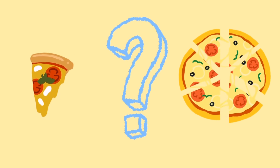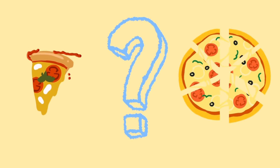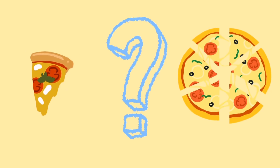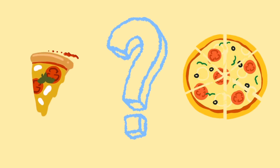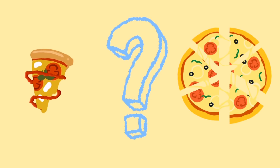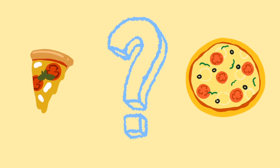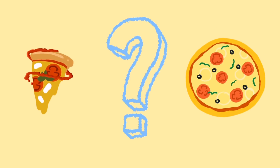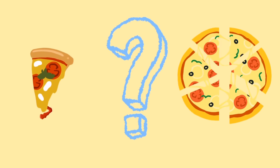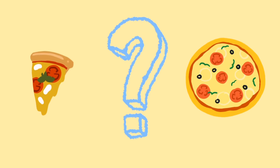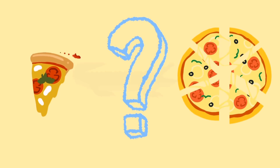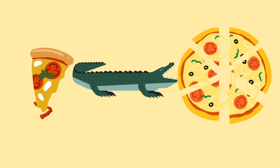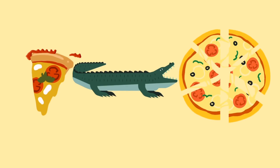One day he sees two plates in front of him. One plate has six pizza slices and the other has just one. Can you tell me which plate Mr. Crocodile will choose? Here's a clue: Mr. Crocodile always likes to eat a lot of food. Mr. Crocodile will choose the first plate with six pizza slices.